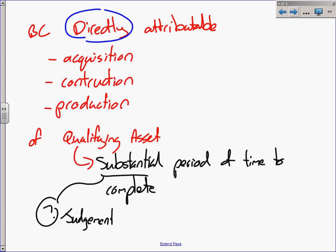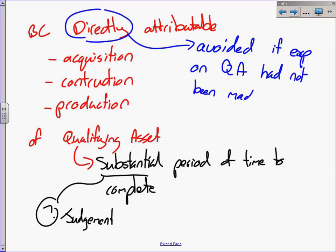What is quite important is borrowing costs can only be capitalized that are directly attributable to acquisition, construction, or production. And directly means that the borrowing costs could be avoided if the expenditure on the qualifying asset had not been made.